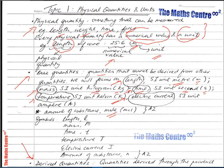The symbols for the base quantities are: L for length, M for mass, t (small t) for time, T (capital T) for temperature, and I for electric current. In A2, when we deal with amount of substance, we will use N as the symbol.